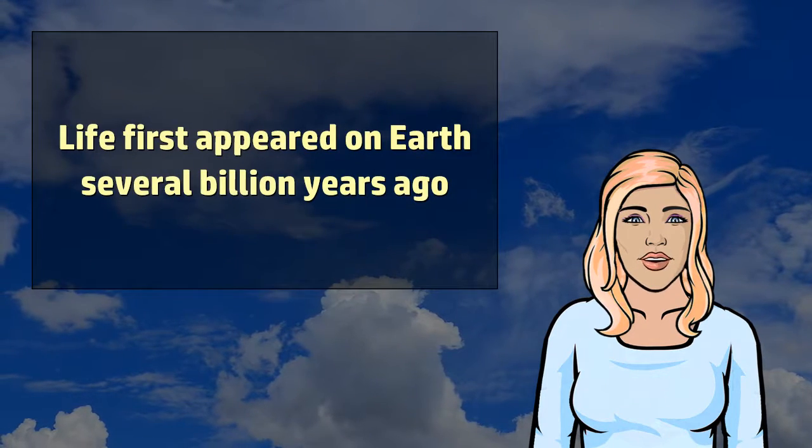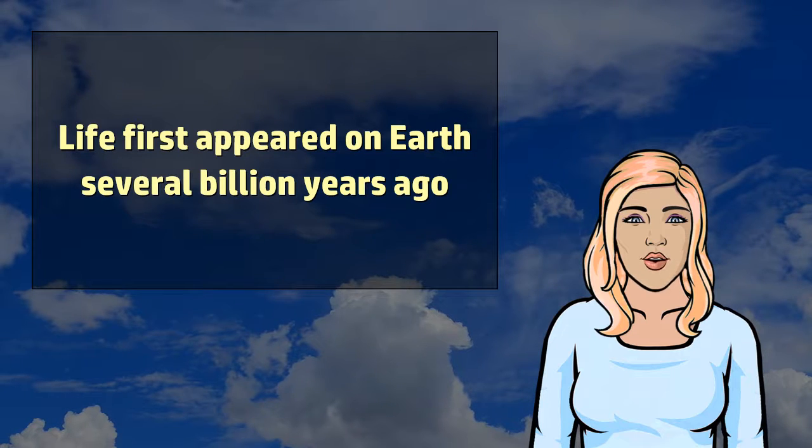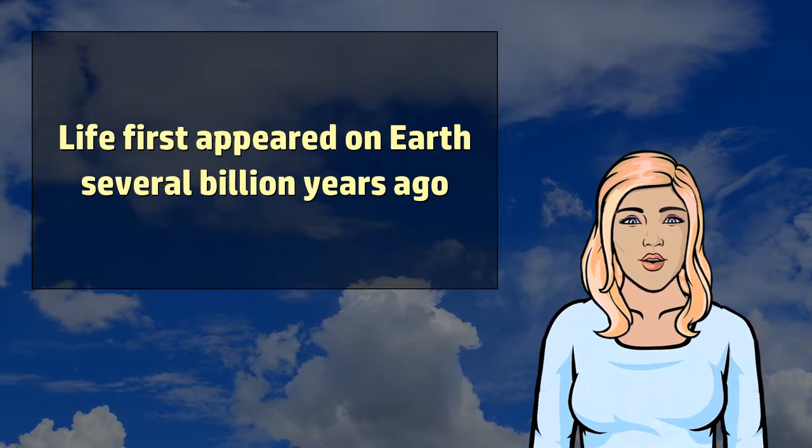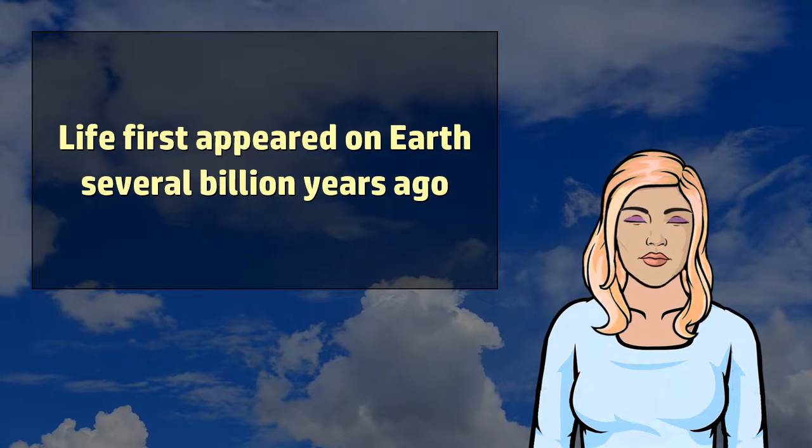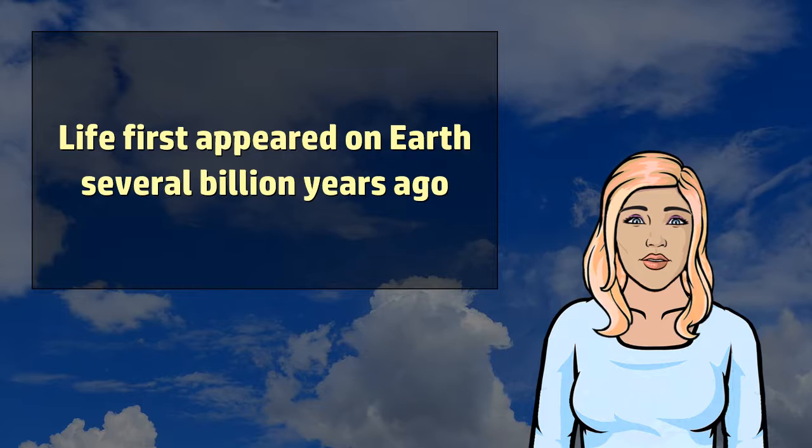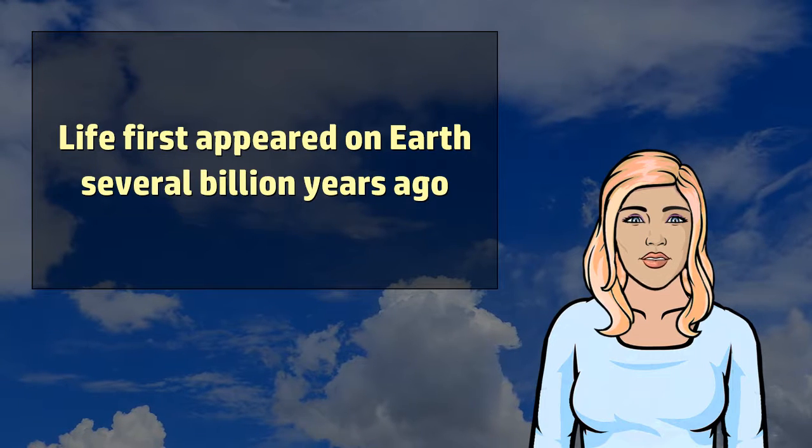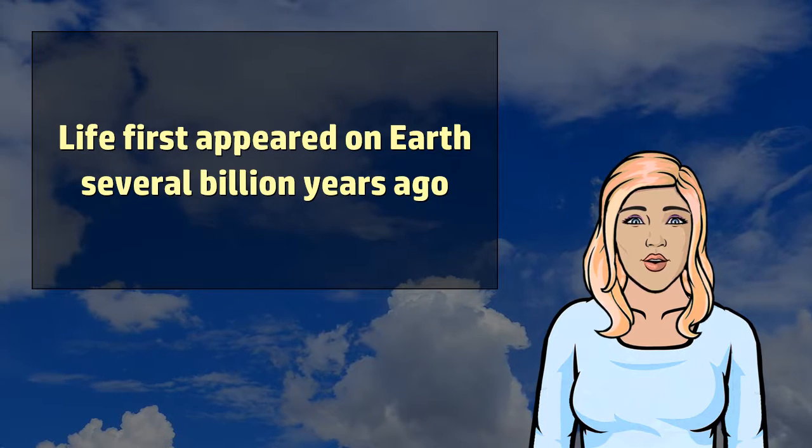Within the first billion years of Earth's history, life appeared in the oceans and began to affect the Earth's atmosphere and surface, leading to the proliferation of aerobic and anaerobic organisms. Some geological evidence indicates that life may have risen as much as 4.1 billion years ago.